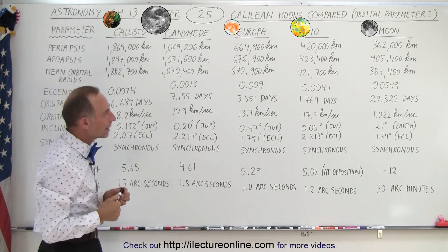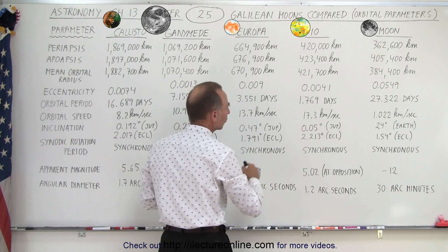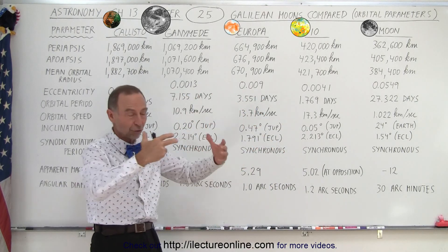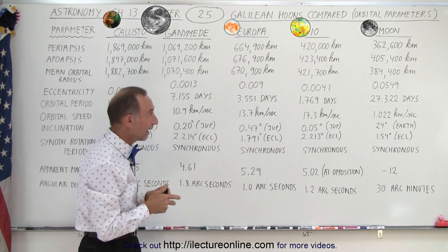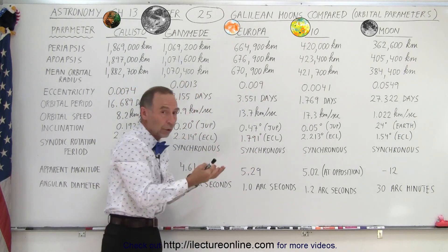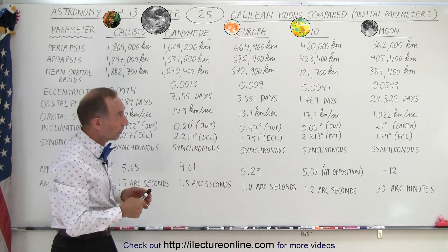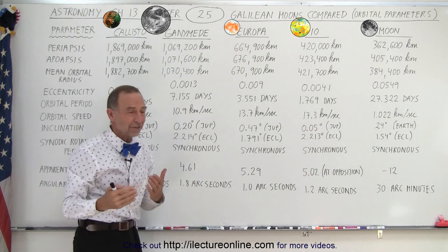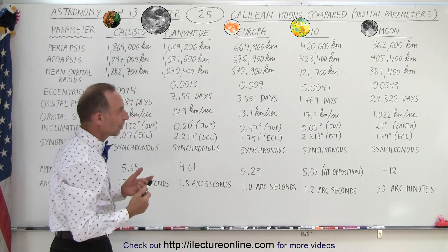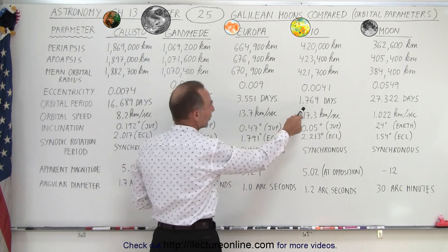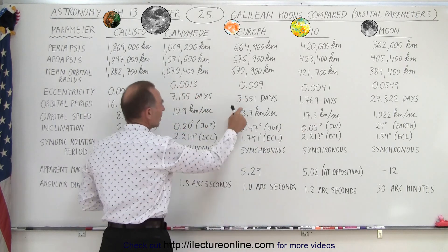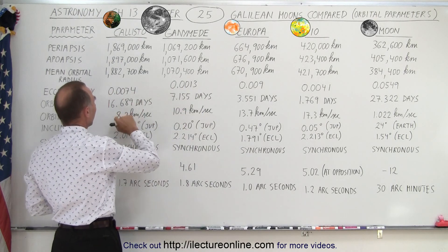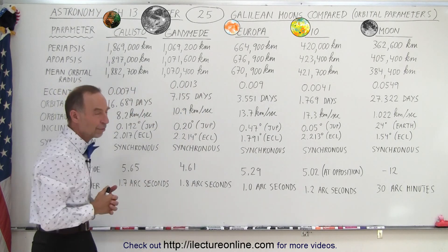Taking a look at the orbital period — how long it takes for these moons to go around Jupiter — since Jupiter is an enormous planet with enormous gravitational force, and since the four Galilean moons are relatively close to Jupiter, they need to move pretty fast to avoid falling in. The orbital period is only 1.769 days for Io, 3.551 days for Europa, 7.155 days for Ganymede, and 16.689 days for Callisto.